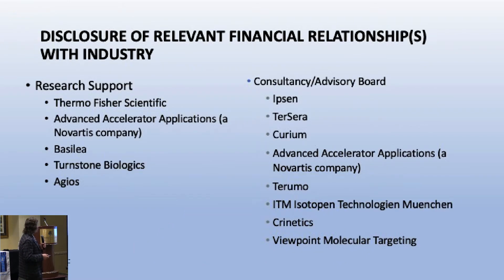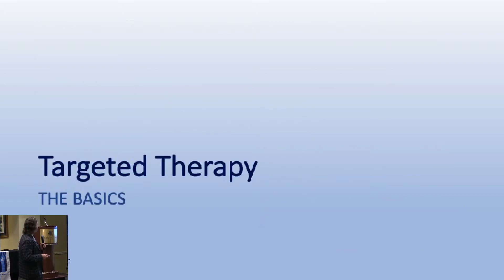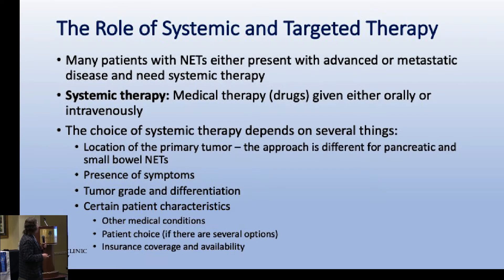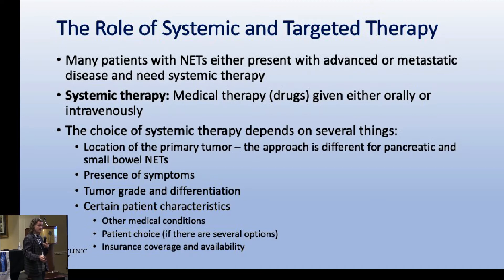Let's get into the basics - the role of systemic and targeted therapy. Many patients with neuroendocrine tumors present with advanced or metastatic disease, and others will have localized disease that will later come back as metastatic. So there is a huge need for what we call systemic therapy.